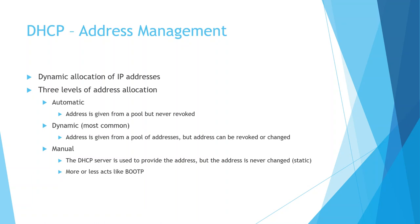DHCP dynamically allocates IP addresses using something called a pool. There are three levels of address allocation: automatic, dynamic, and manual. Automatic is more of a BOOTP-style scenario where an address is given from a pool but never revoked — more of an assignment than a lease. Dynamic, which is the most common, means the address is given from a pool configured by the DHCP administrator, but the address can be revoked, changed, modified, or updated.